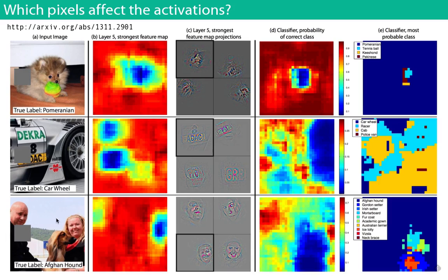There's an interesting third case where the label is Afghan Hound. The classification probability of it being labeled as an Afghan Hound actually increases if you occlude the man's face in the image. That should make sense because the man's face is almost a distraction — part of the network may be trying to classify it as a man. If you occlude the man, more of the focus goes to the Afghan Hound. So this is a neat way of figuring that out.